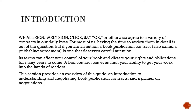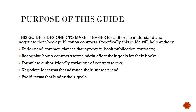This section provides an overview of this guide — an introduction to understanding and negotiating book publication contracts, and a primer on negotiations. This guide is designed to make it easier for authors to understand and negotiate their book publication contracts. Specifically, this guide will help authors understand common clauses that appear in book publication contracts, and recognize how a contract's terms might affect their goals for their books.